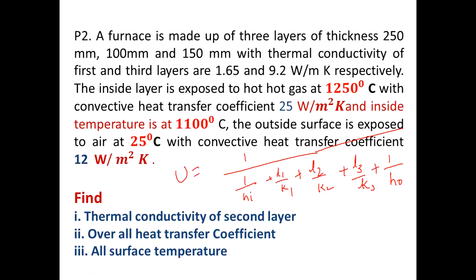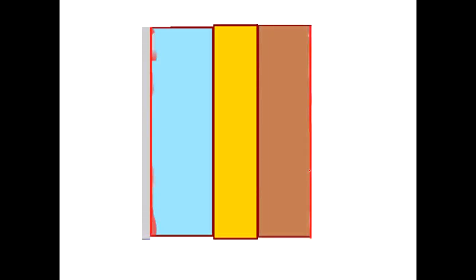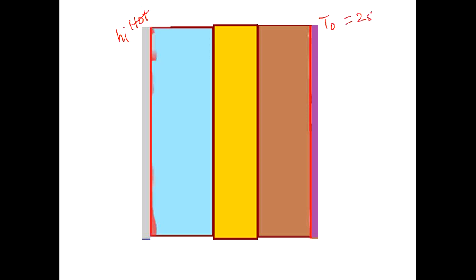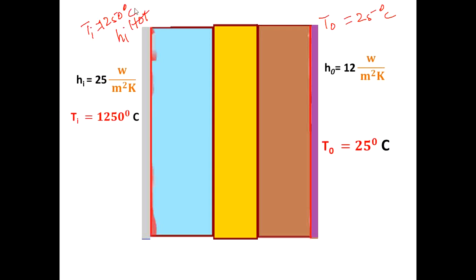Observe how I am going to solve the problem. You have the first layer, second layer, and third layer. The first layer is exposed to the internal heat transfer coefficient HI — this is the hot side. Externally, it is exposed to the cold side, T0, which is 25 degrees Celsius. TI is 1250 degrees Celsius. HI, H0, and all other values are given. K1 is given, K2 is not given — that you want to find. K3 is given. L1, L2, L3 are all converted into meters.